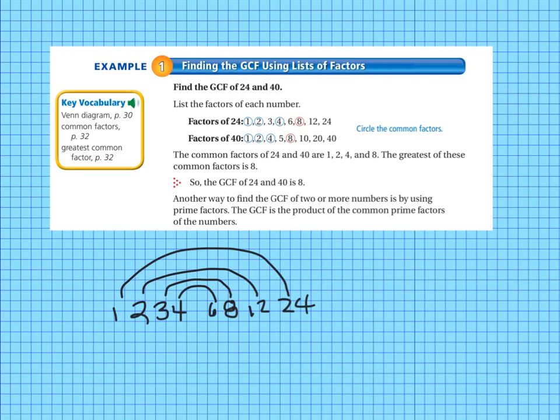Then the next thing you do after you've got all of the factors for both of the numbers that you're looking at, 24 and 40, is you look to see what your common factors are. So remember that common factors are the factors that are in both of your factor lists. So the common factors of 24 and 40 are 1, 2, 4, and 8.